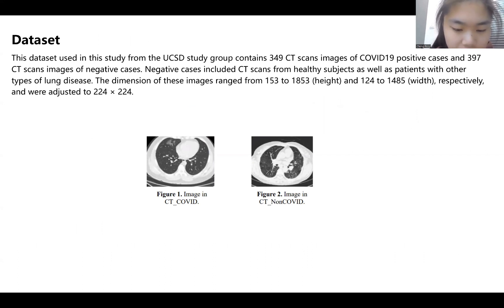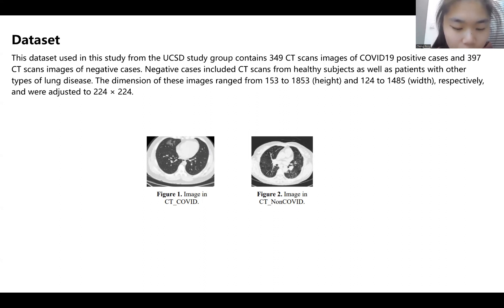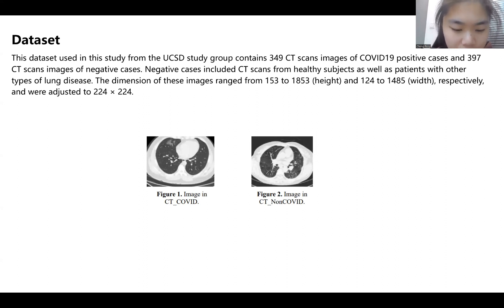The dataset used in this study is from the UCSD study group and contains 349 CT scan images of COVID-19 positive cases and 397 CT scan images of negative cases. Negative cases include CT scans from healthy subjects as well as patients with other types of lung disease. The positive and negative datasets were split into a training set and a test set with a ratio of 8 to 2.